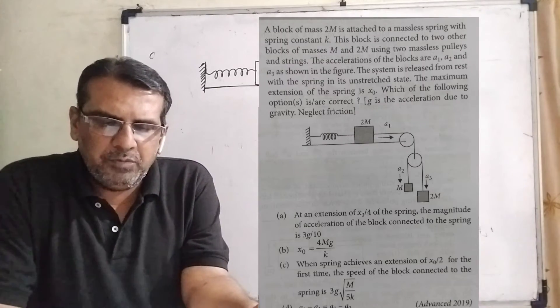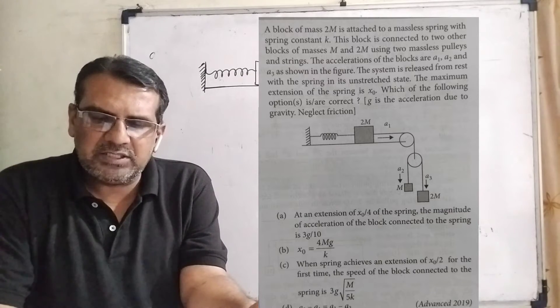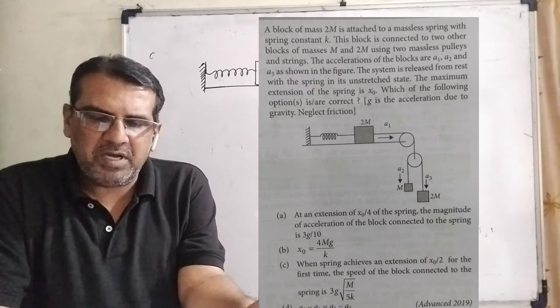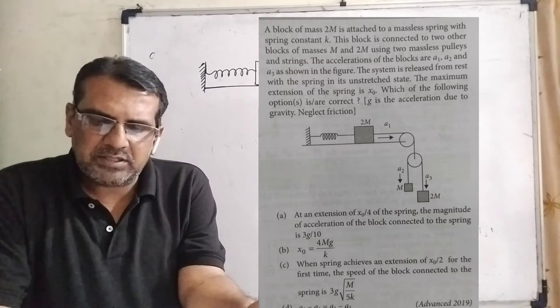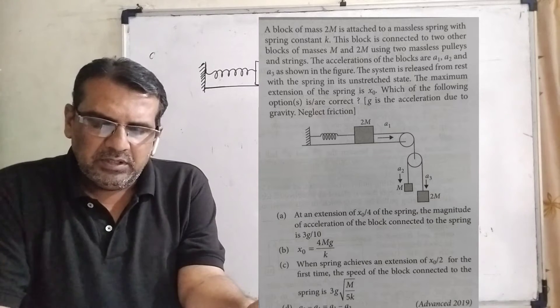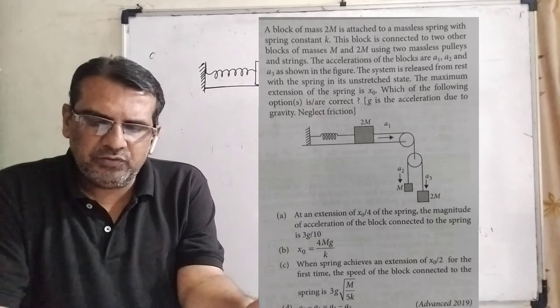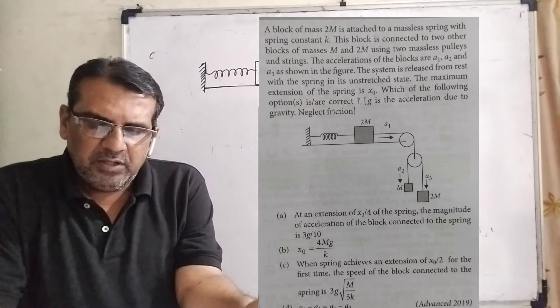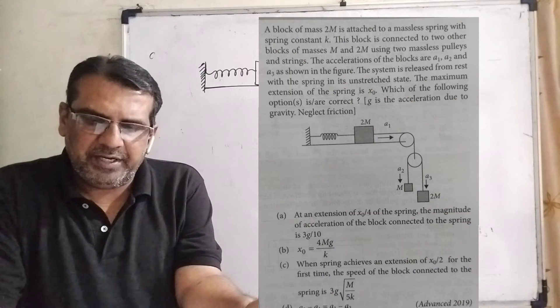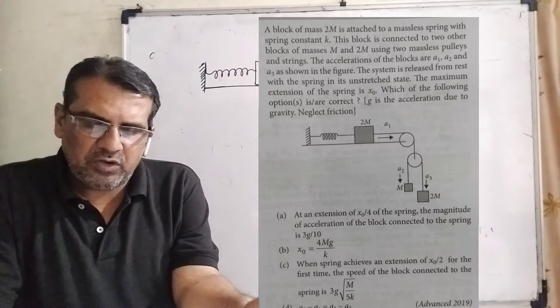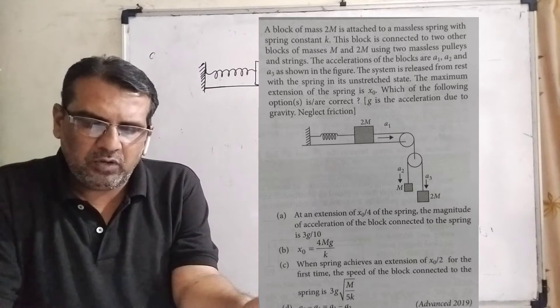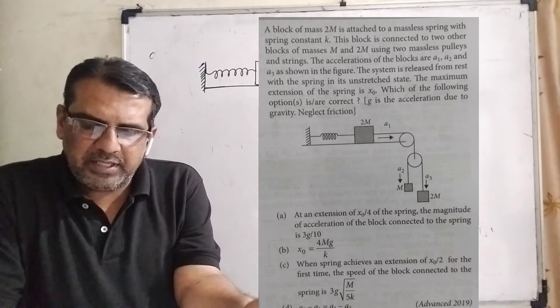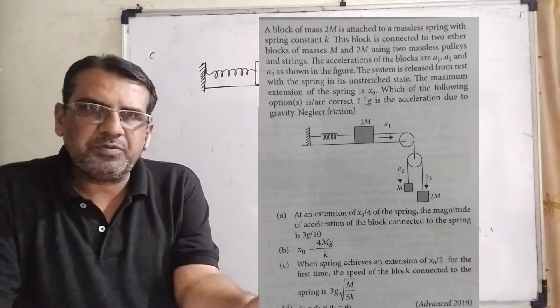So here is the question. A block of mass 2m is attached to a massless spring with spring constant k. This block is connected to two other blocks of masses m and 2m using two massless pulleys and strings. The system is released from rest with the spring in its unstretched state. The maximum extension of the spring is x0. Which of the following options is correct? Here g is the acceleration due to gravity.